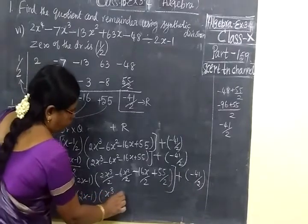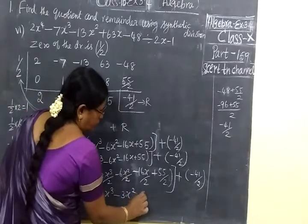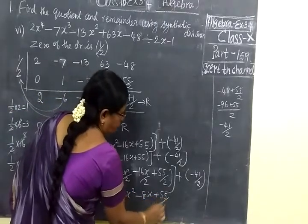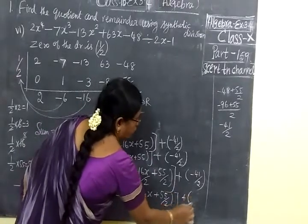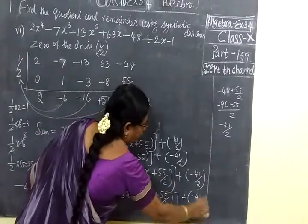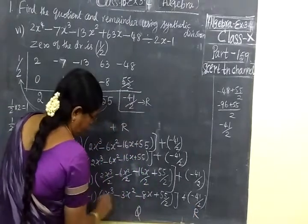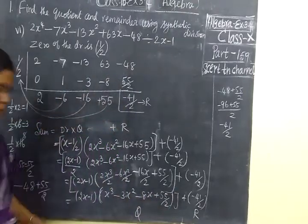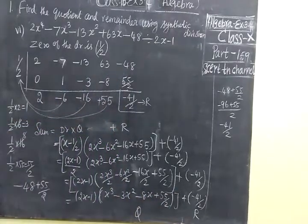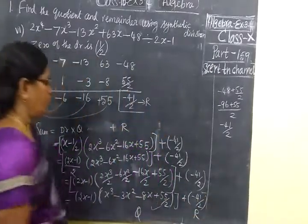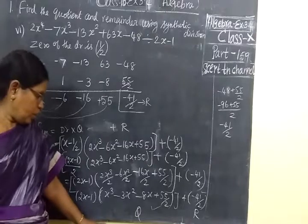So x^3 minus 3x^2 minus 8x plus 55/2 plus remainder is minus 41/2. We can write either remainder or quotient portion. This one is quotient portion. Once again, we check the answer. So quotient equal to x^3 minus 3x^2 minus 8x plus 55/2, and the remainder equal to minus 41/2.